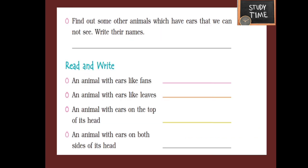Next, find out some other animals which have ears that we cannot see. They are swan, fish, fly, mosquito, crocodile, etc.